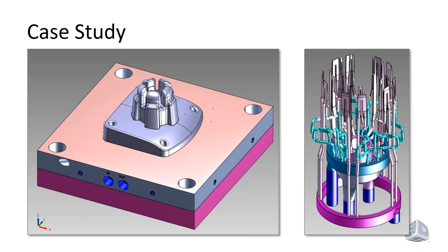Let's look at a case study. One of our engineers worked on this with a customer. Looking at that core, it has some thick areas, some thin areas, and some very deep ribs that we have to work around. The resulting waterline is shown on the right. There are a couple of techniques employed in building this — it's not just one automatic thing. It gives you an idea of how far you can go with conformal cooling and what it can really do for you.